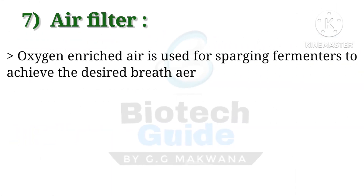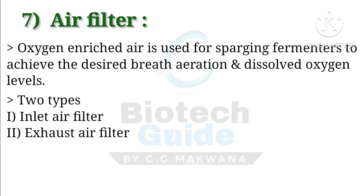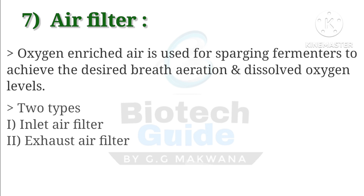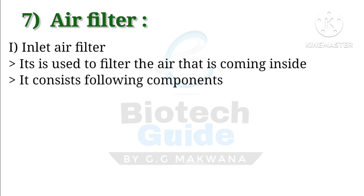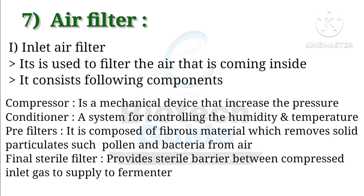The seventh part is the air filter. Oxygen-enriched air is used for the sparging mechanism to achieve the desired aeration and dissolved oxygen levels. Two types are there: inlet air filter and exhaust air filter. The inlet air filter is used to filter the air coming inside and consists of the following components: a compressor, which is a mechanical device that increases pressure; and a condenser, which provides a system for controlling humidity and temperature.